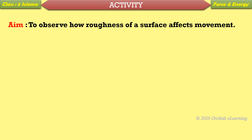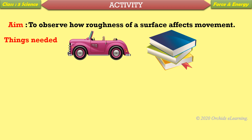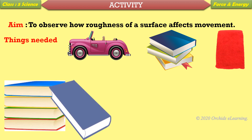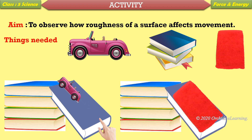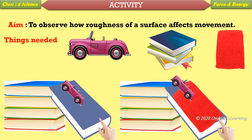Activity — To observe how the roughness of a surface affects movement. Things needed: a toy car, some books, and a towel. Arrange the books as a slope and gently push the toy car down it. Then place the towel over the slope and again push the car down. The toy car easily runs down the surface of the books but barely moves over the towel. We can conclude that movement across a smooth surface is easier as it produces less friction.